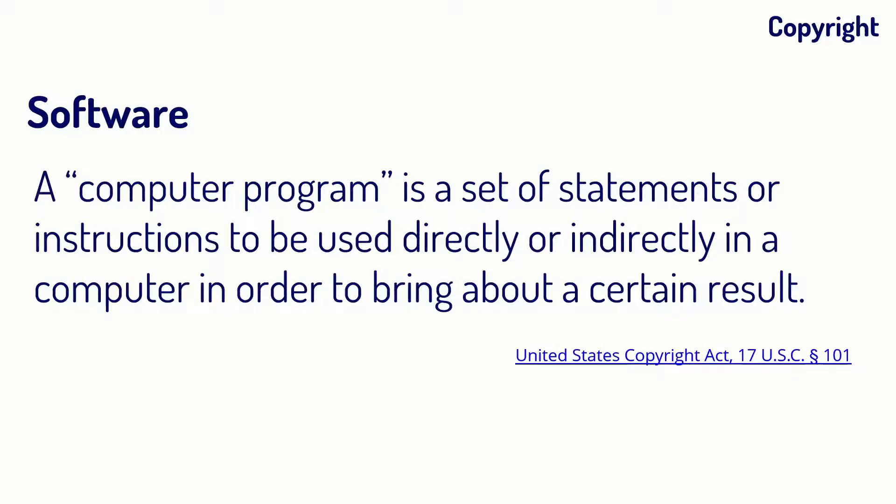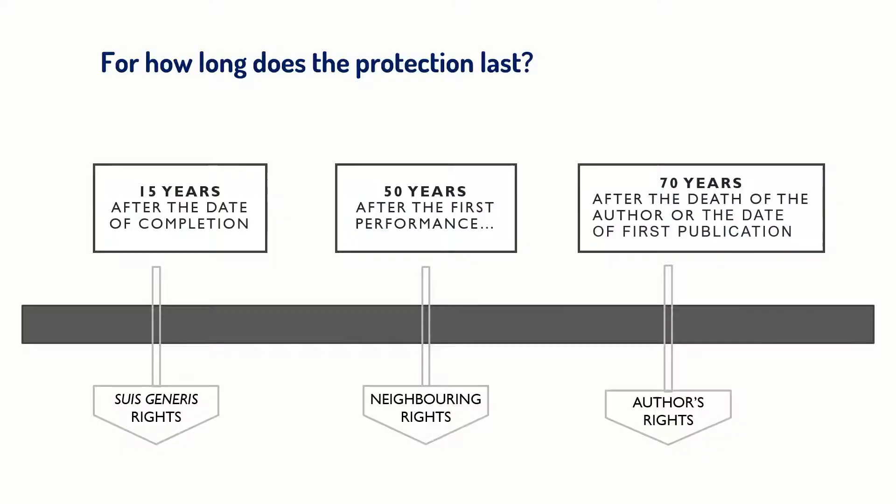The most commonly known licenses in the past were software licenses, part of the beginning of the open movement. Software is also protected by copyright. Initially there was debate about whether software should be protected by industrial property or copyright, but they decided on copyright because the protection is longer, registration is not needed, and there are more harmonized laws around the world concerning copyright.